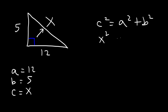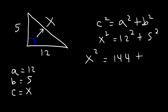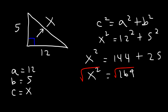So we have x squared is equal to 12 squared plus 5 squared. Now 12 times 12 is 144 and 5 squared is 25. 144 plus 25 is 169. To calculate the value of x we need to take the square root of both sides. The square root of 169 is 13, and so that's how you can calculate the hypotenuse of a right triangle.